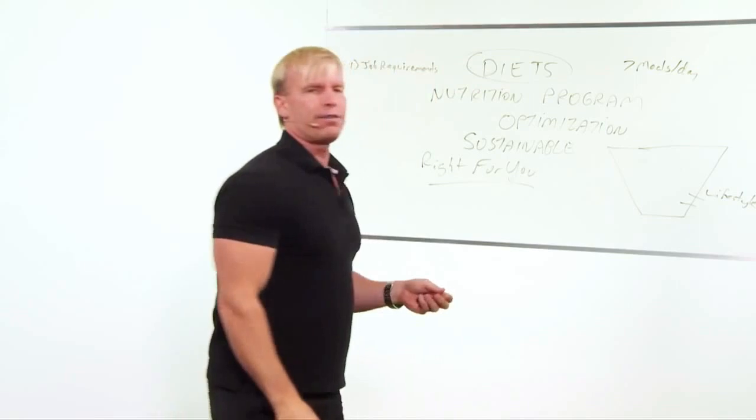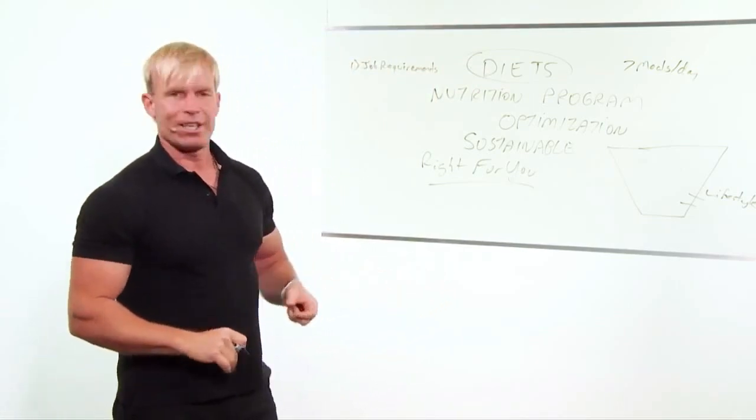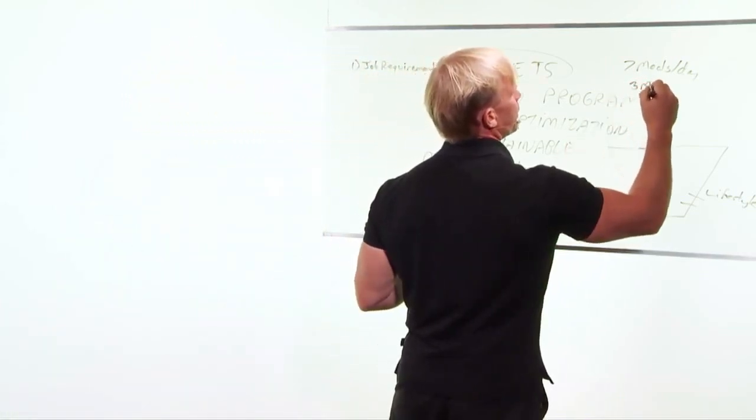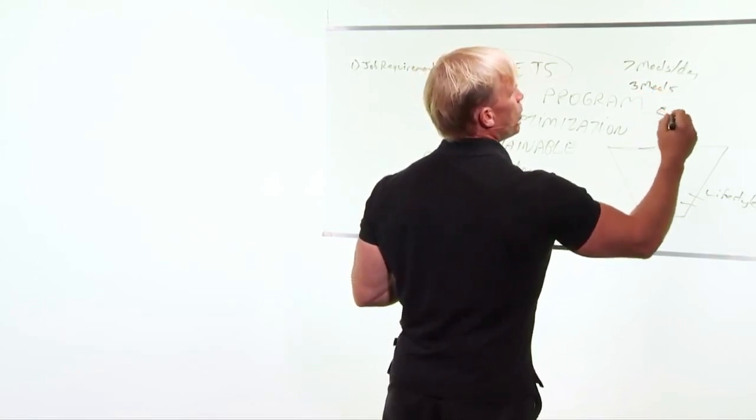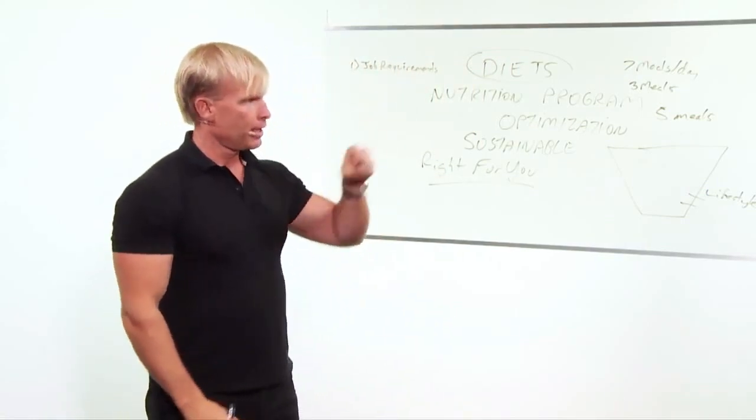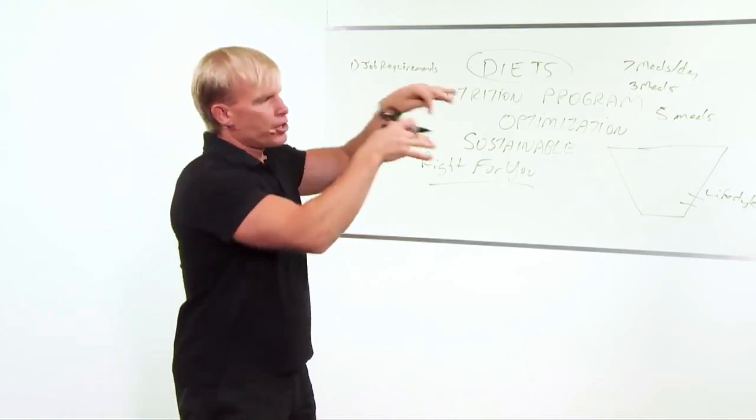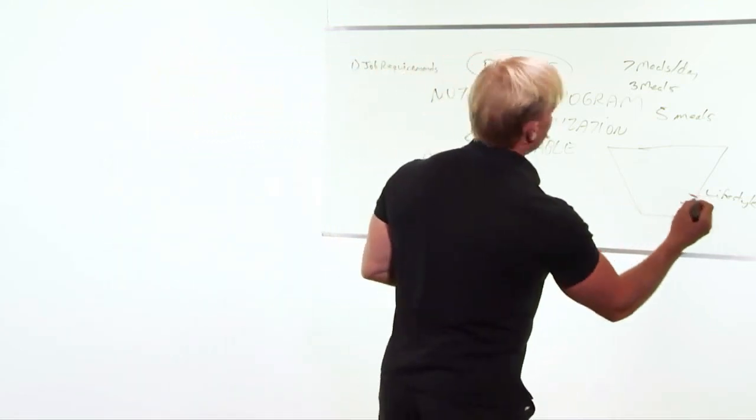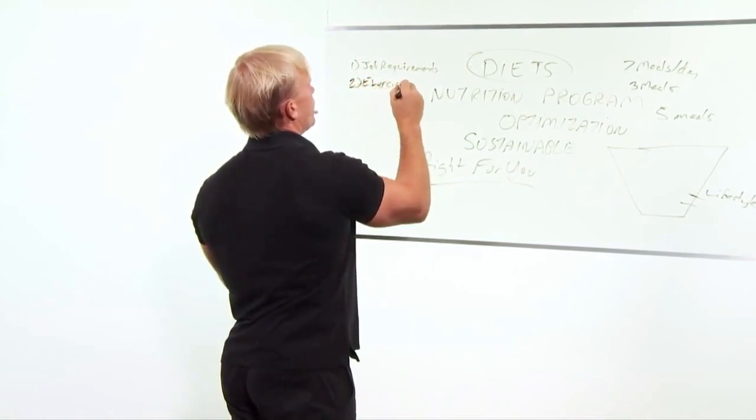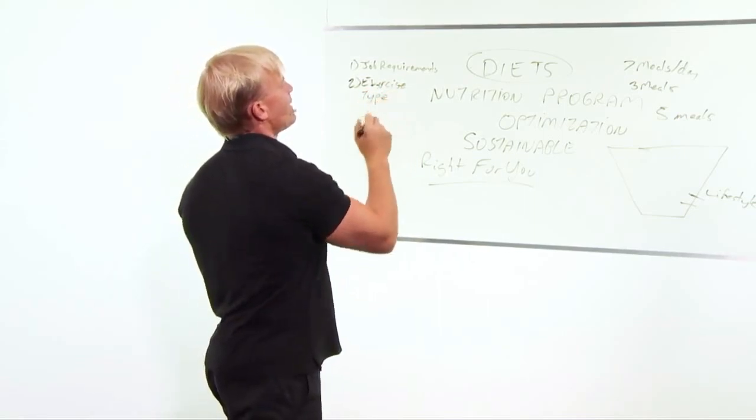Obviously if you're a senior citizen and you don't have a lot of exercise or activity in your life, you can probably get by on three meals. Most people will be five meals. We talked about that earlier: your shake, your salad, and a meal in the evening, and then you fit your snacks in between. What is your exercise? What type of exercise is this?